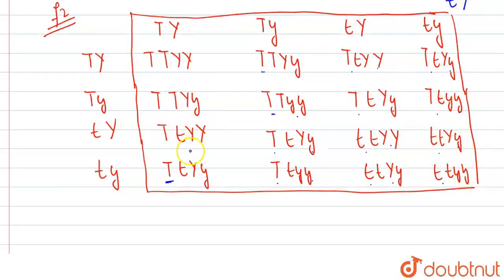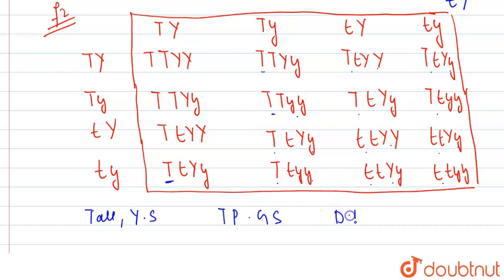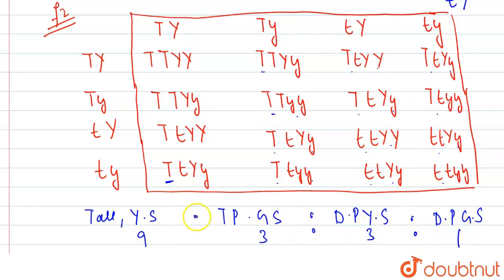Looking at the phenotypic ratio: we have tall plants with yellow seeds, tall plants with green seeds, dwarf plants with yellow seeds, and dwarf plants with green seeds. So the phenotypic ratio becomes 9:3:3:1. This is the phenotypic ratio because we can see how the appearance of each progeny would be — these are the phenotypic outcomes.